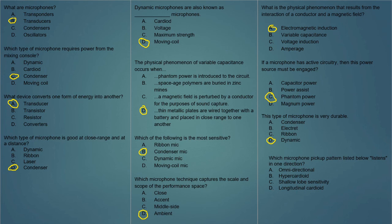Last question: which microphone pickup pattern listed below listens in one direction? A, omnidirectional; B, hypercardioid; C, shallow lobe sensitivity; or D, longitudinal cardioid? The answer is B — hypercardioid. It's a specific kind of cardioid microphone that has a very focused pickup pattern that listens in one direction. Thanks for watching — I hope you got something from this.